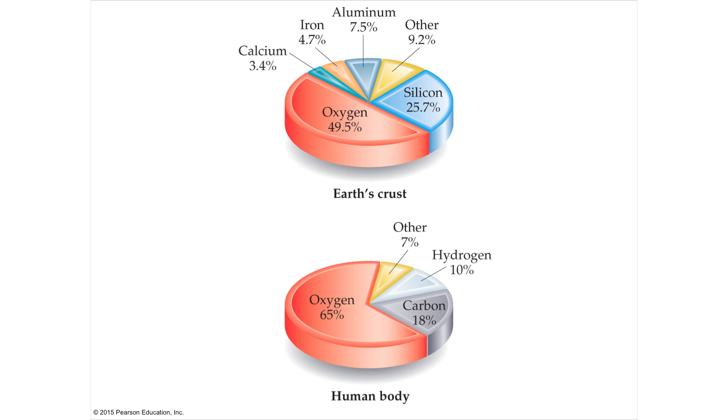And if you were to look in the human body, you would have a different set of just a very few. You'd have oxygen, carbon, and hydrogen. Just those three make up more than 90% of the mass of the human body. So just very few.